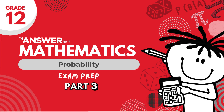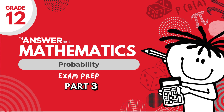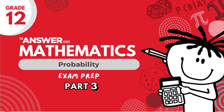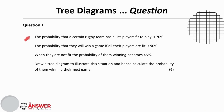Hi and welcome to the third of our exam prep videos for probability. This video covers questions on tree diagrams. Question 1 is about the probabilities of a team winning when considering the fitness of its players, and we are asked to draw a tree diagram to illustrate the situation and hence calculate the probability of them winning their next game. Pause the video here to have a read through and then give it a try.